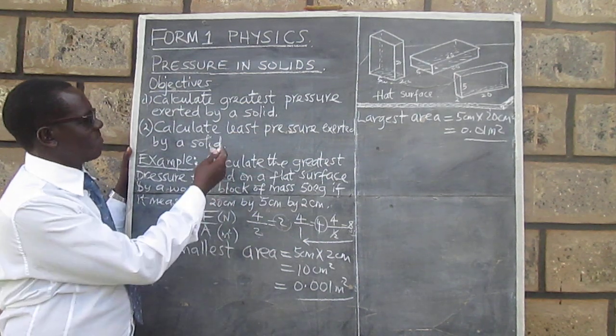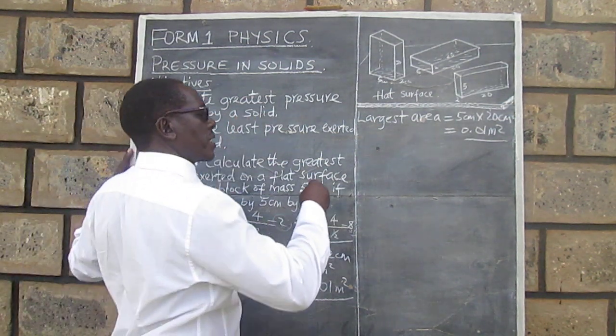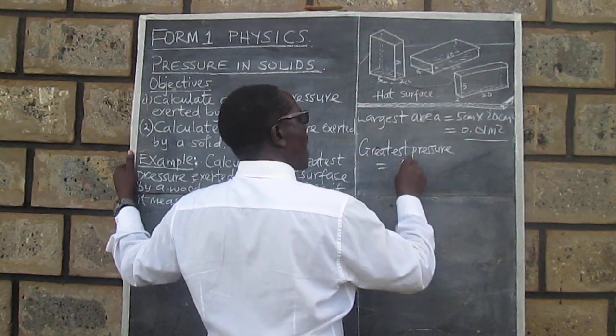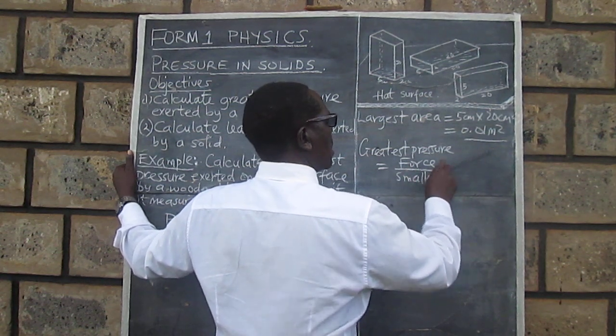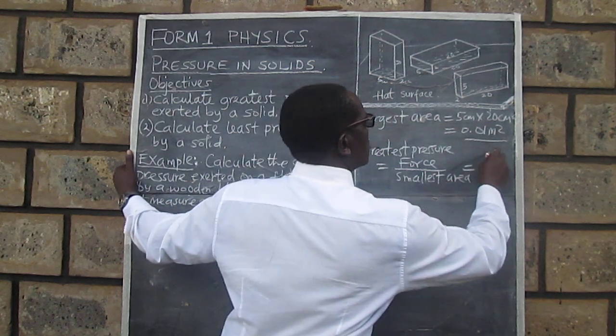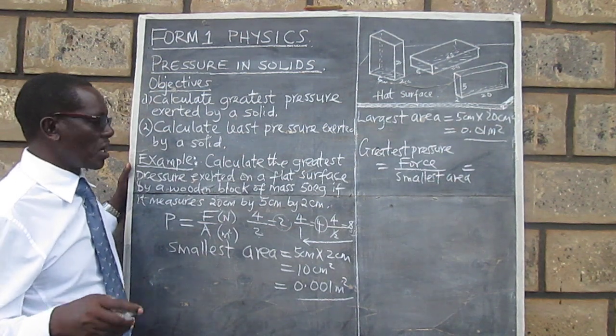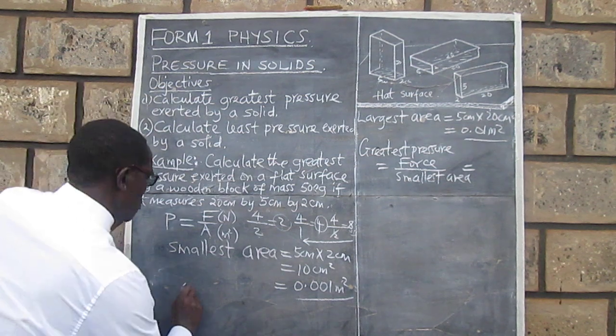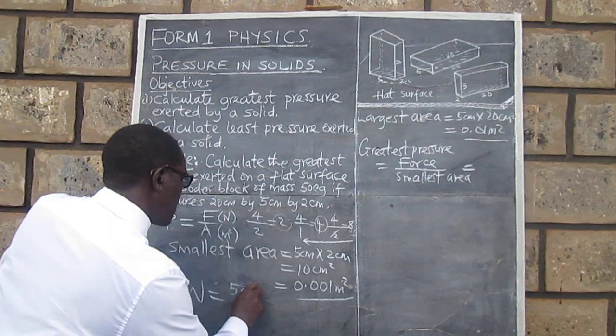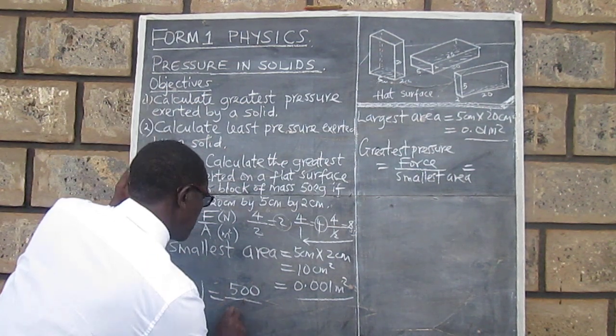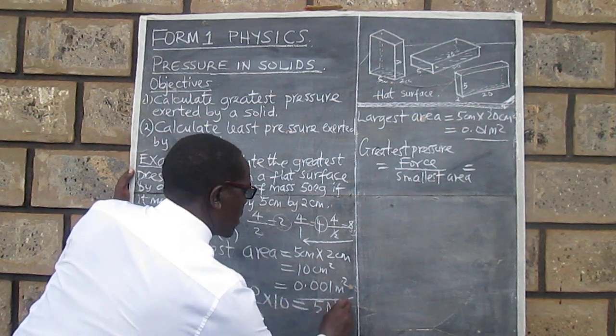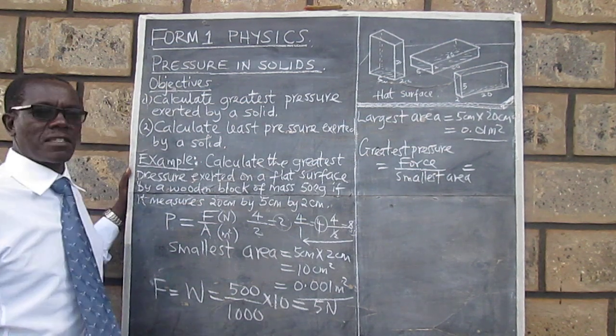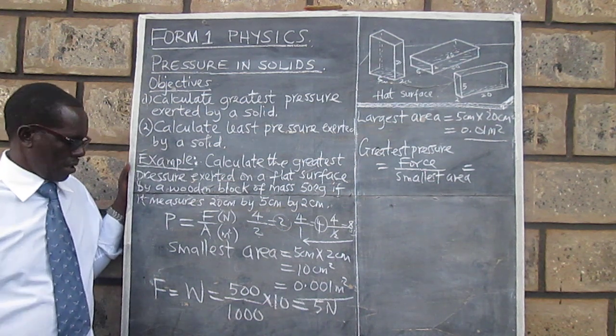So we are ready now to answer the question or to work as per our objectives. We get the greatest pressure. Greatest pressure equals force divided by smallest area. Now for the force, we should have worked out the force here. We are given the mass - the mass is 500 grams. So we can work out the weight. The weight we will get by converting this first of all to kilograms by dividing by 1,000 and multiplying by 10, so that we get 5 Newtons. So this weight, the weight of our block, is 5 Newtons, and this is what we will use as the force.